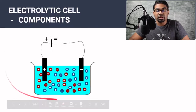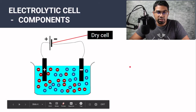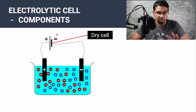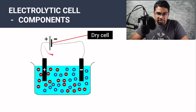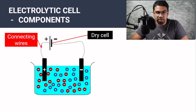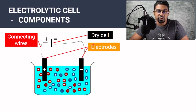This is a basic electrolytic cell, let's look at the components. First we have a dry cell. This dry cell is actually an electrochemical cell, but we will cover that in another video. So here we have a dry cell which is the power source which drives the movement of electrons in the electrolytic cell. Then we have the connecting wires that connects the dry cell to the electrodes.